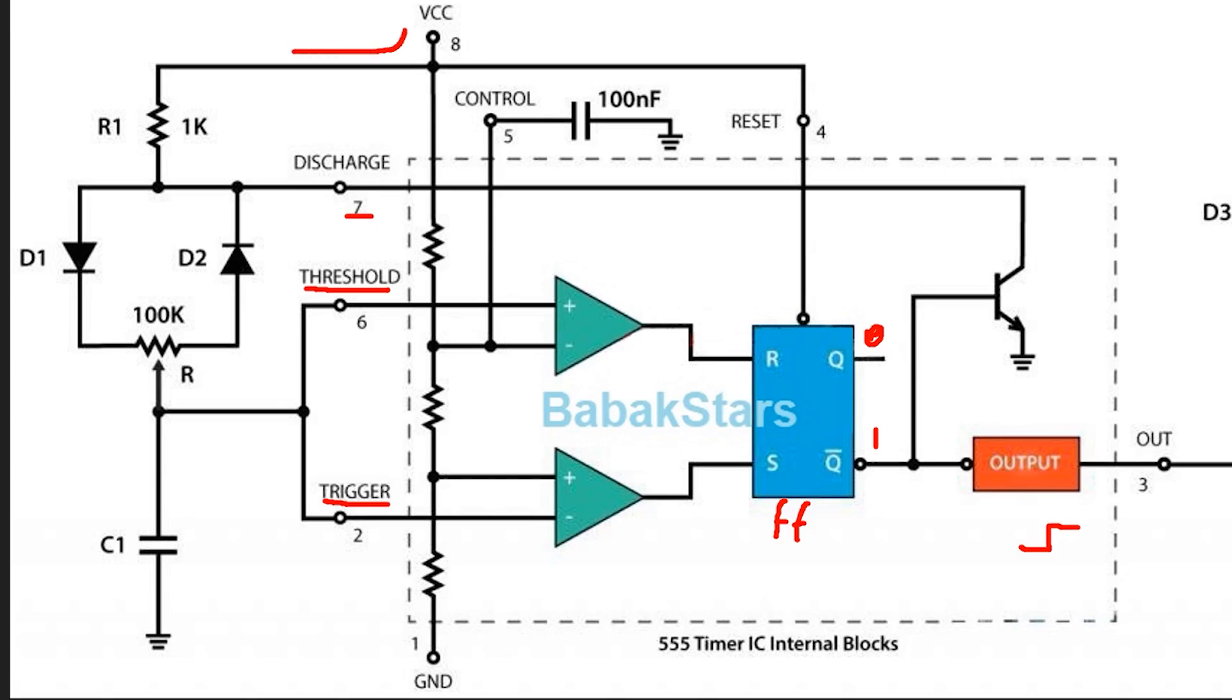Now, let's see how the surrounding components work. The capacitor charges through this resistor, the diode, and part of this second resistor. During this time, the output is low.